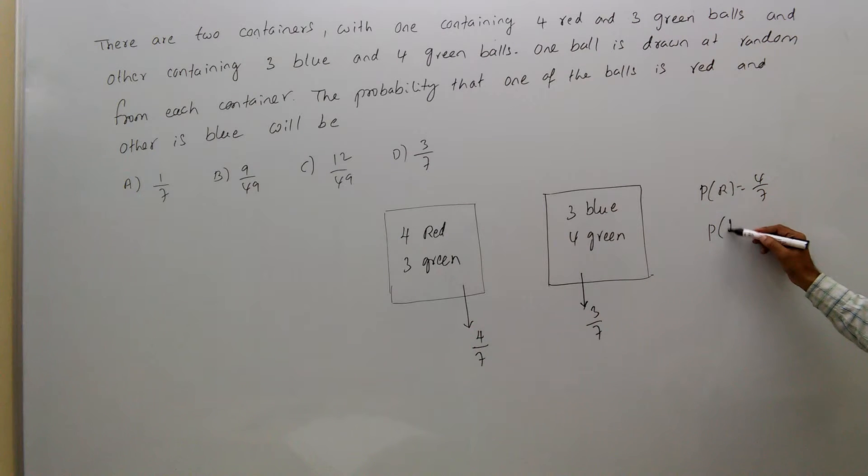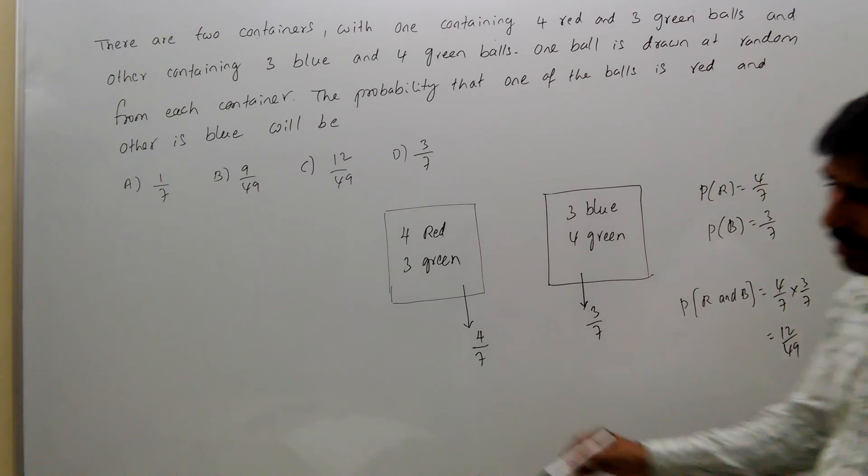Probability of getting red and blue ball is 4 by 7 multiplied by 3 by 7, which equals 12 by 49. Answer is C.